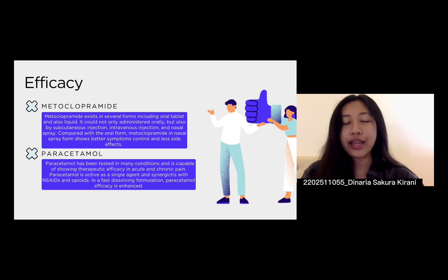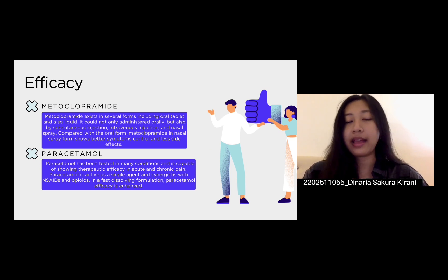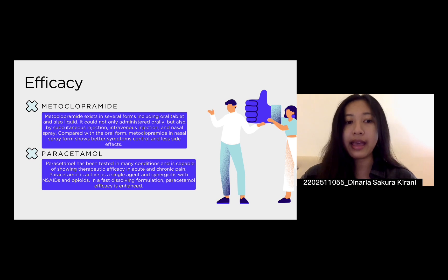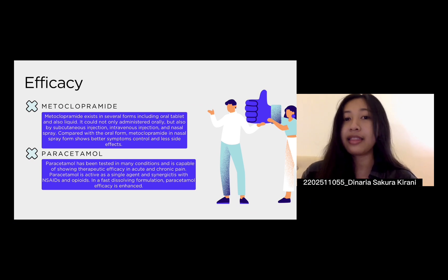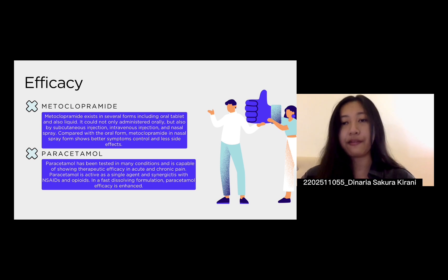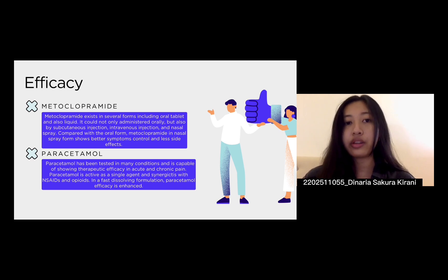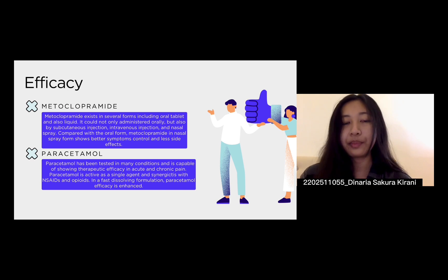Hello, my name is Dinaria Sakura Kirani, and the last three digits of my student number are 055. I will present the efficacy of metoclopramide and paracetamol. Metoclopramide exists in several forms, including oral tablets and liquid. It can be administered orally, by subcutaneous injections, intravenous injections, and nasal spray. Compared to the oral form, the nasal spray shows better symptom control and fewer side effects. The efficacy of paracetamol has been tested in many conditions and is capable of showing therapeutic efficacy in acute and chronic pain. Paracetamol is active as a single agent and synergistic with NSAIDs and opioids.